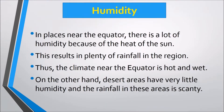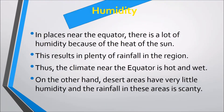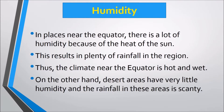Next is humidity. In places near the equator there is a lot of humidity because of the heat of the sun, resulting in plenty of rainfall. Thus, the climate near the equator is hot and wet. On the other hand, desert areas have very little humidity and the rainfall in these areas is scanty.